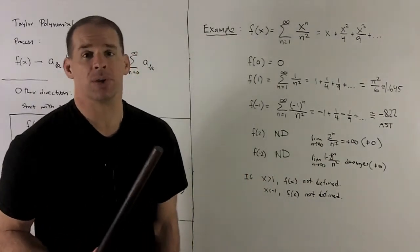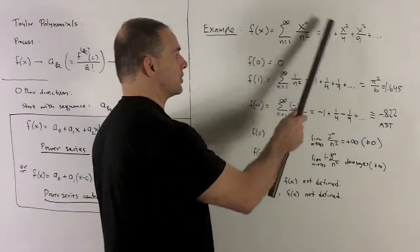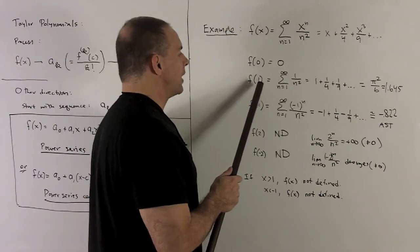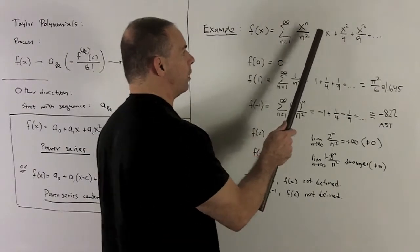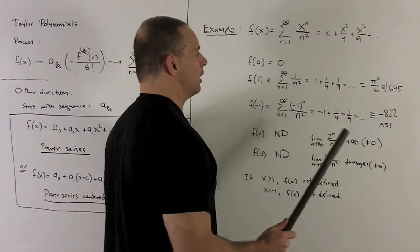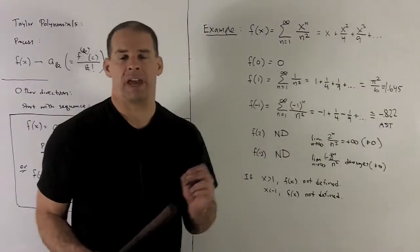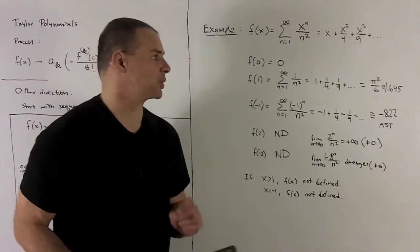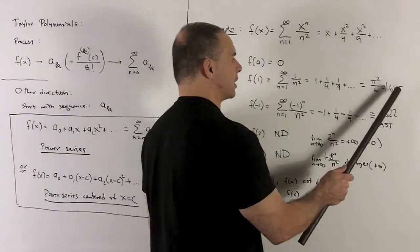In general, f of zero is going to be equal to your a_0 for the sequence. If I put a one in here, well, that's going to just turn x into one, and we have one plus a quarter plus a ninth and so on. And so that's the famous value from Fourier series, pi squared over six, which is roughly 1.645.